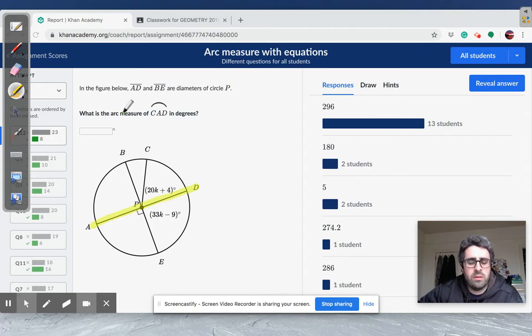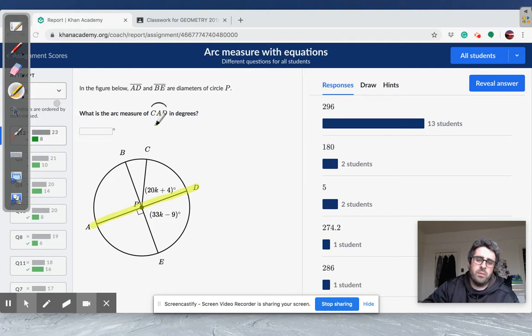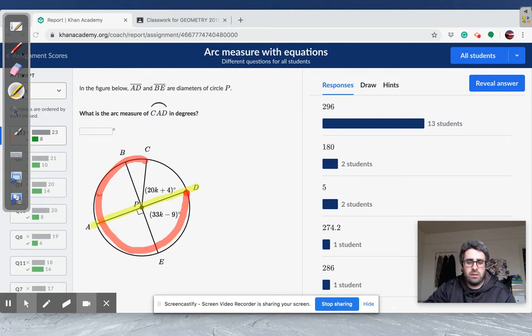So it says, what is the arc measure of CAD in degrees? The way that you read an arc when it has three letters is in the direction of the middle letter. So if I'm starting at C and ending at D, I can't say CD. It's not this arc, the small one. It's in the direction of A. So we're really looking for the measure of this entire thing, that whole highlighted red piece, C, A, D.